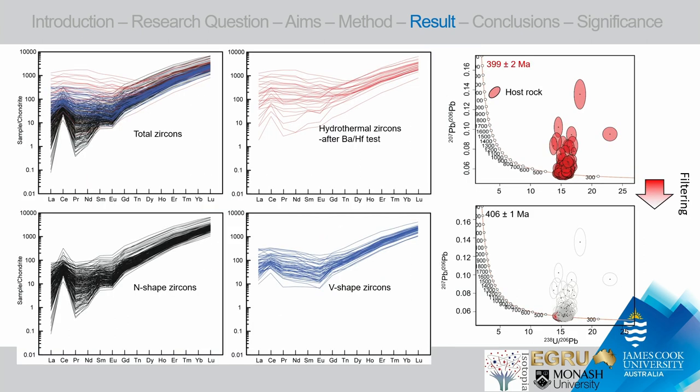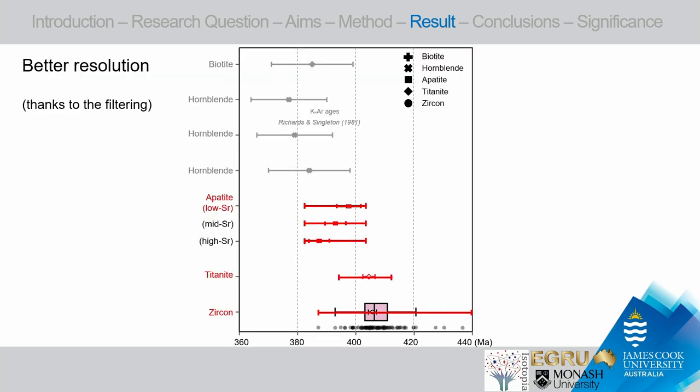The same filtering was applied to apatite and titanite. Here is a compilation of different ages from zircon, titanite, apatite, and the previously known age for the study area. Before filtering, the ages overlapped so much we couldn't see much difference. But after filtering, we get a more constrained age range. Now we can see an interesting relationship: zircon and titanite have a similar age range, while apatite is somewhat younger. The previous study that defined the age of Mount Buller is obviously younger than what I found in this study.